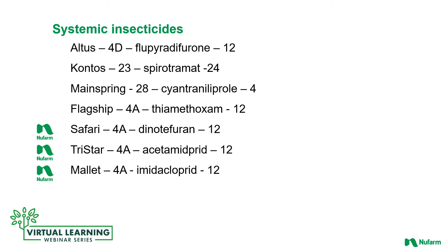Products like imidacloprid (Mallet), dinotefuran (Safari), and acetamiprid (TriStar) have benefited growers for years and still do. Alternates for IRAC class 4 include Mainspring, which is IRAC-28, and Kontos, which is IRAC-23.